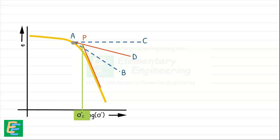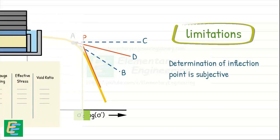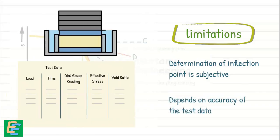There are of course some limitations of this Casagrande method of obtaining the pre-consolidation stress. We can obviously point out that interpretation of the point of maximum curvature is very subjective. Also, the accuracy of determining pre-consolidation stress with this method is highly influenced by the accuracy of consolidation test data received.